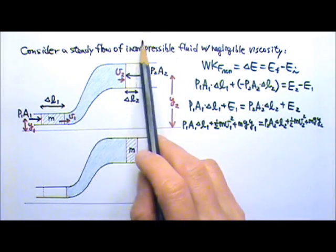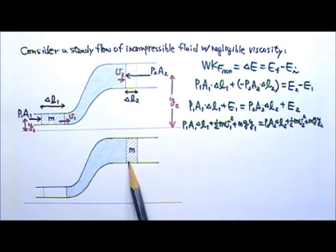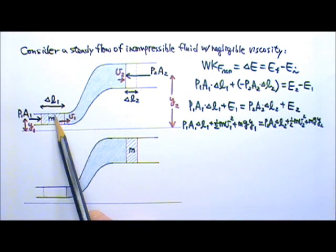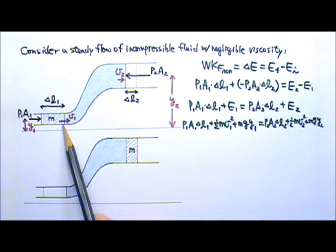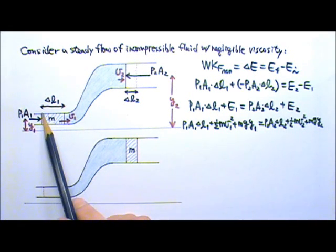Because the fluid is incompressible, the same mass of fluid would occupy the same volume. The volume of this cylinder over here is the cross-sectional area times the length of the cylinder.